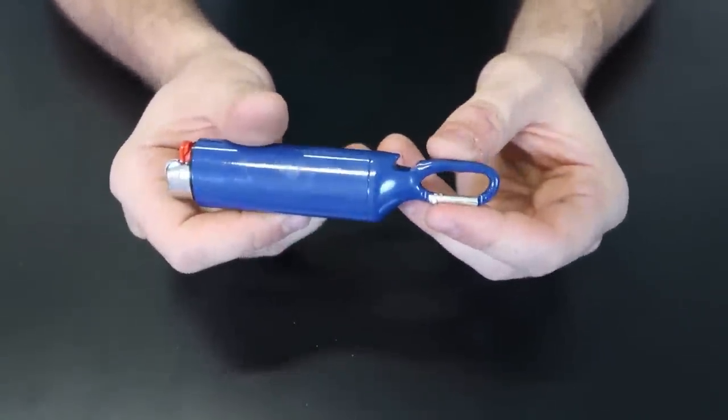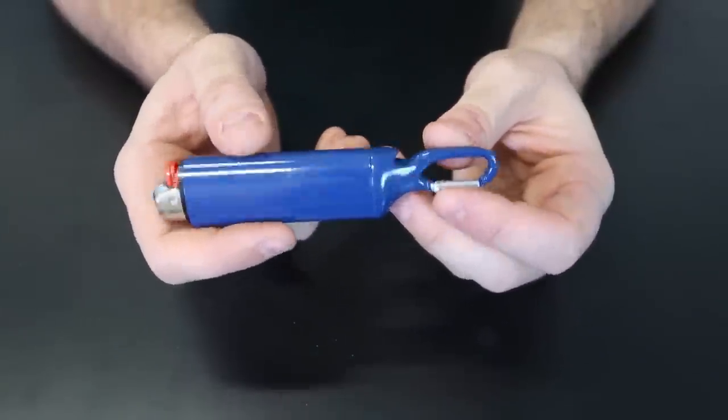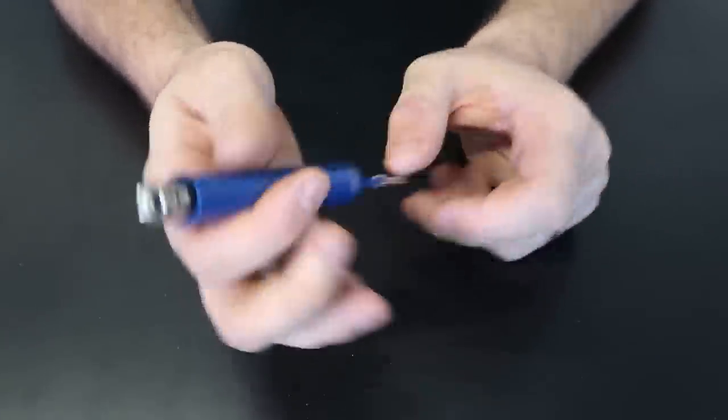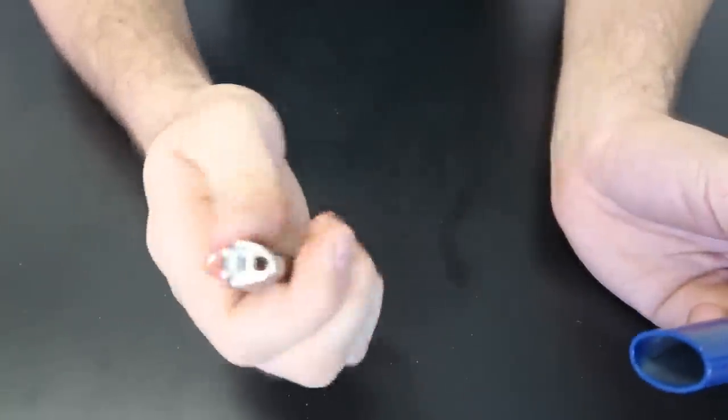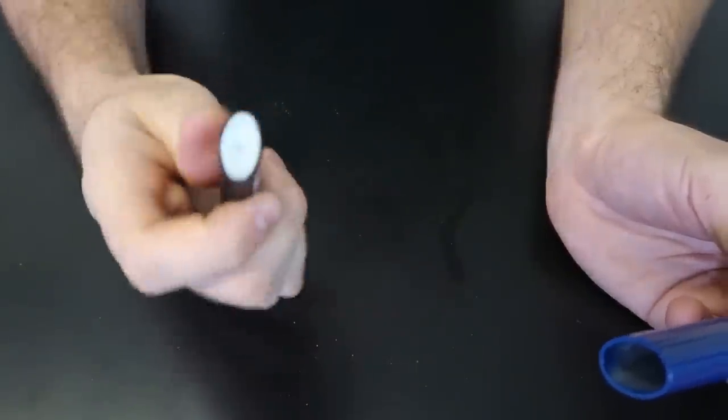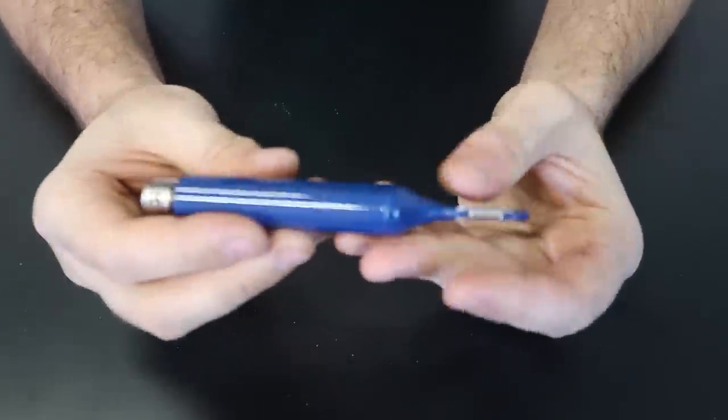And then you have carabiner, put it on your belt, backpack, whatever, and a bottle opener. How cool is that? So you have just an ordinary refillable lighter that becomes super useful.